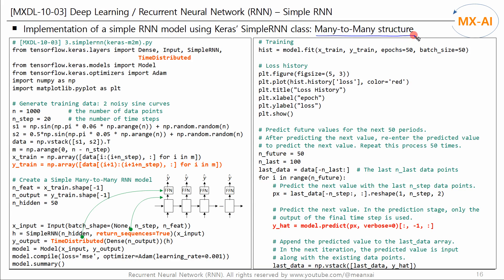Finally, let's implement a many-to-many RNN model using Keras' SimpleRNN. We import the SimpleRNN and TimeDistributed classes, then create a dataset for a many-to-many RNN model. This data consists of two sine curves with different frequencies, just like the previous code. X-Train has a 3D structure, but this time Y-Train also has a 3D structure because this is a dataset for a many-to-many model. Please refer to the second video in this series for how to construct this dataset.